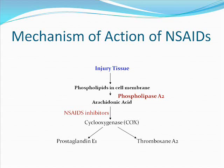What is the mechanism of action of NSAIDs? When you have injured tissue, phospholipids are released in the cell membrane, which are converted to arachidonic acid, which in turn is converted by cyclooxygenase enzymes COX-1 and COX-2 to prostaglandins and thromboxane. NSAIDs inhibit the action of COX by competitive antagonism to prevent the formation of inflammatory mediators such as prostaglandins and thromboxane.